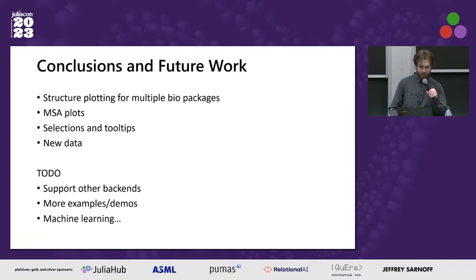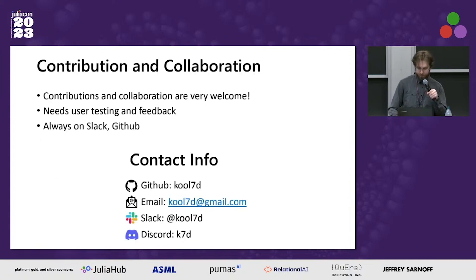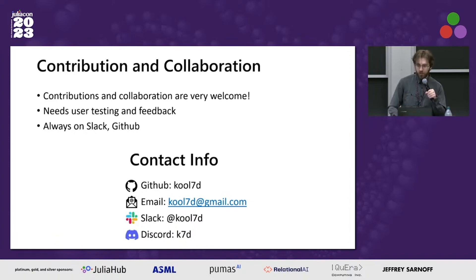In summary: BioMakie provides structure plotting for multiple BioJulia packages, multiple sequence alignments, selections, tooltips, and methods for creating new data. Future work will include extending support to other backends, adding more examples and demos, and improving documentation. Based on other talks, there's exciting machine learning work in BioJulia that this front end could connect with. Contributions and collaborations are very welcome — new demos, fixing spelling mistakes — and user testing and feedback is the most useful thing once the new version is tagged. Feel free to contact me on Slack or GitHub.